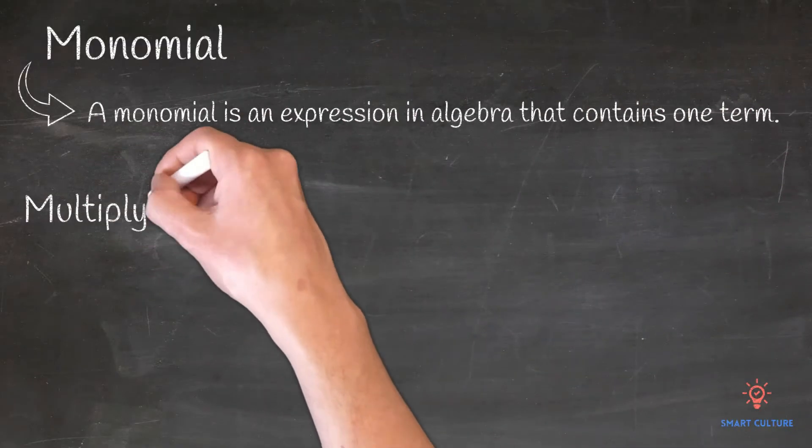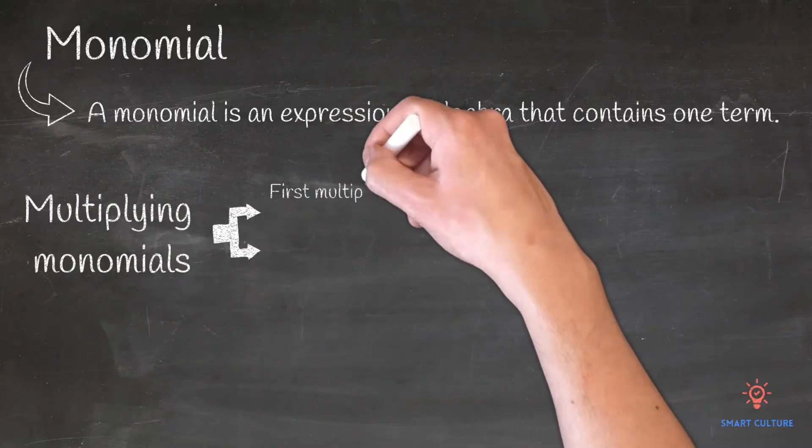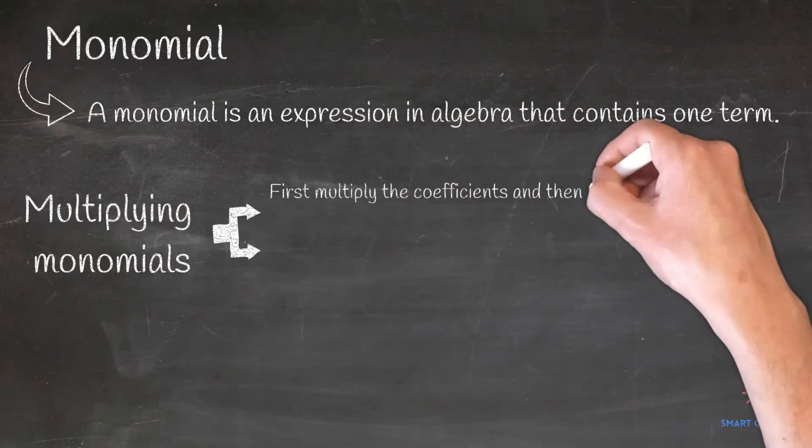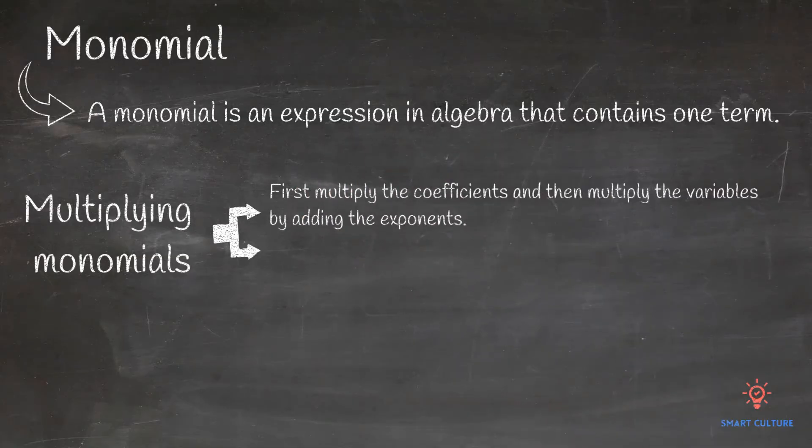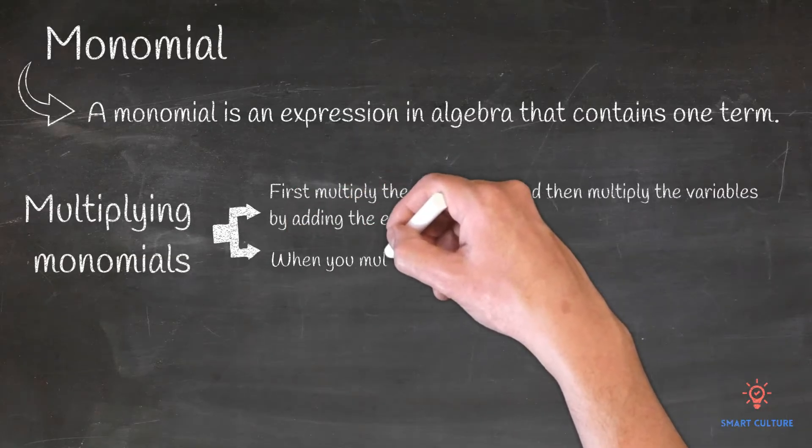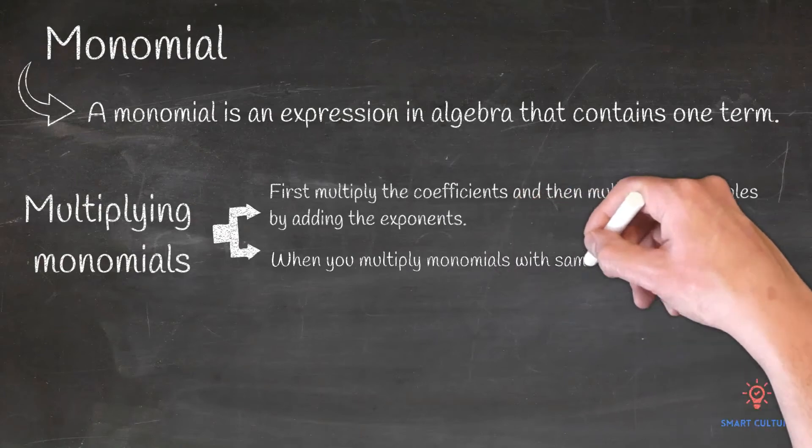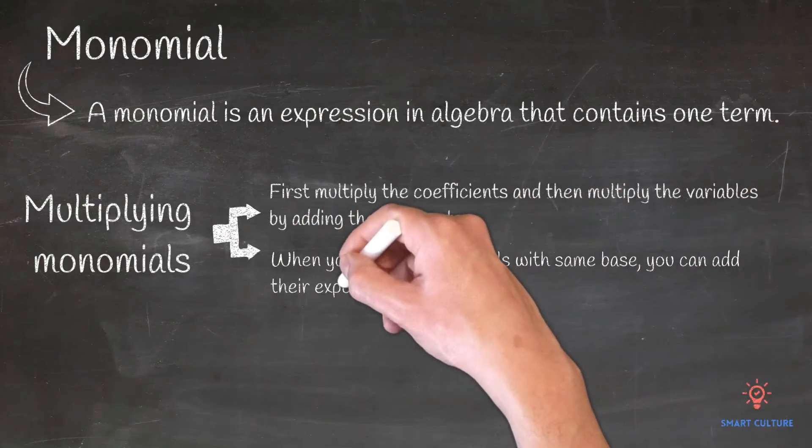When you multiply monomials, first multiply the coefficients and then multiply the variables by adding the exponents. When you multiply monomials of the same base, you can add their exponents.